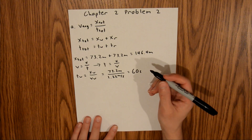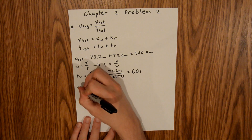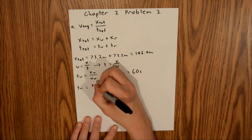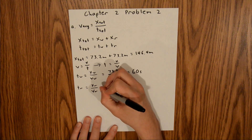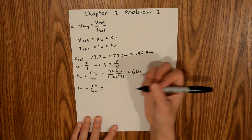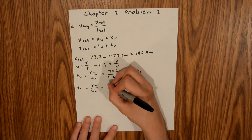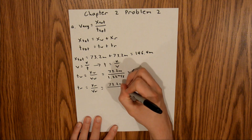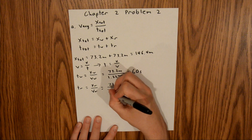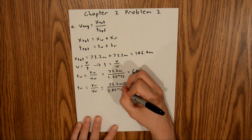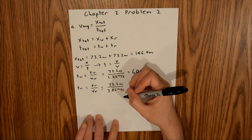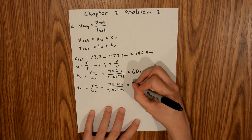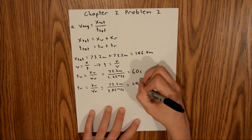And we can do a similar calculation for the time ran. Time ran is equal to displacement ran over velocity ran, and again, we are given those in the problem. 73.2 meters divided by 3.05 meters per second. And if you plug that into your calculator, you will find that this is equal to 24 seconds.